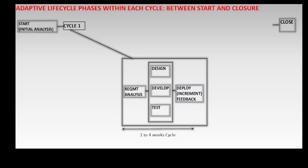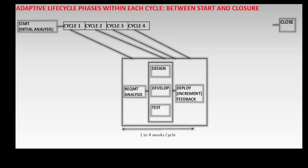From this diagram, between the start and close of the project, in the first cycle, the first increment is created and could be deployed, and feedback is received. This feedback is used to modify the first increment in the second cycle, and new features could also be developed to create a second increment, which could be deployed, and feedback is received. Likewise, in the third and fourth cycles, the third and fourth increments are created, which could also be deployed, and feedbacks are received. The phases are repeated in subsequent cycles up to the last cycle, when the last increment is created, accepted, and also deployed.